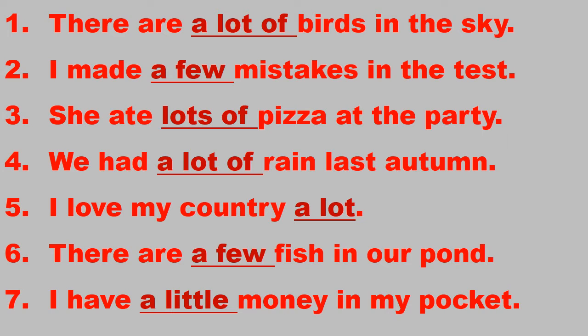Now, as you can see, there are some sentences on the screen. I am going to read these sentences one by one — just imagine in your mind what the differences are among these sentences. Number one: there are a lot of birds in the sky. Number two: I made a few mistakes in the test. Number three: she ate lots of pizza at the party. Number four: we had a lot of rain last autumn. Number five: there are a few fish in our pond. Number six: I have a little money in my pocket.